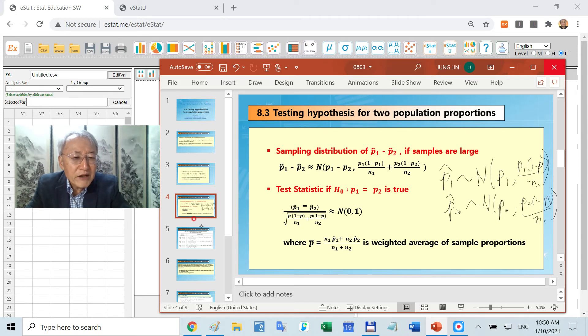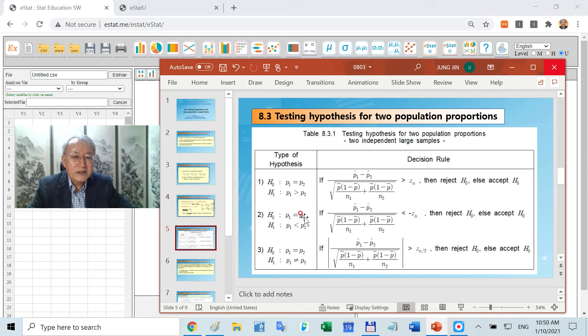It's a weighted average of two sample proportions. We are using P bar. It's a weighted average. And instead of P1 and P2, we just plug in here. That's the test statistic. Then we can have a formula like this.